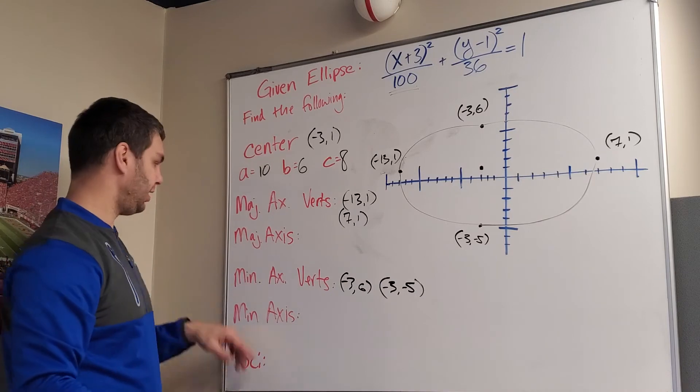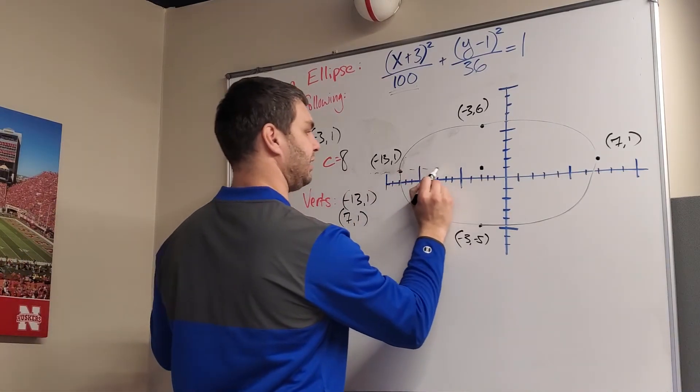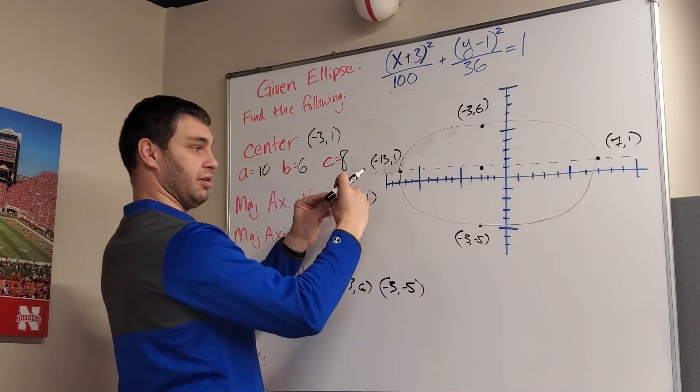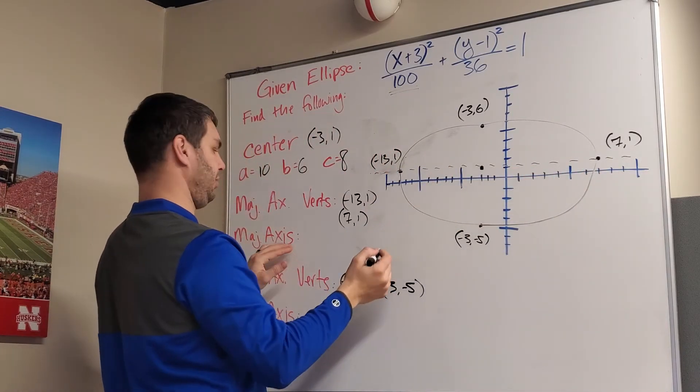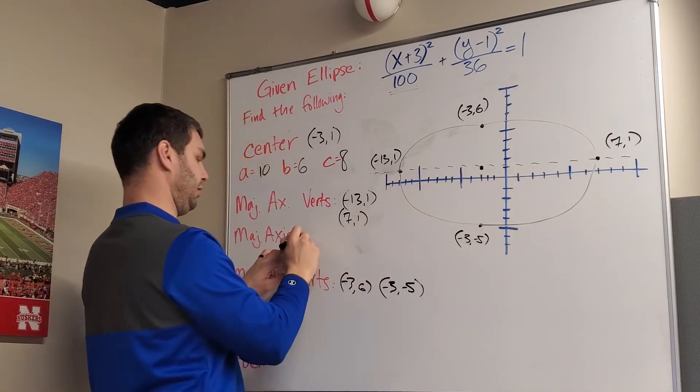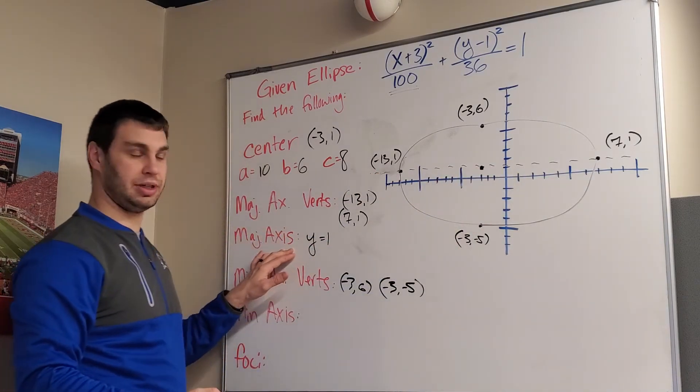So a couple other things that we need here is we need the major axis. Well, again, that'd be like if I connected a dotted line that goes through the long side here. This is going to be the line y = 1. Everything, all these dots are on the line y = 1.